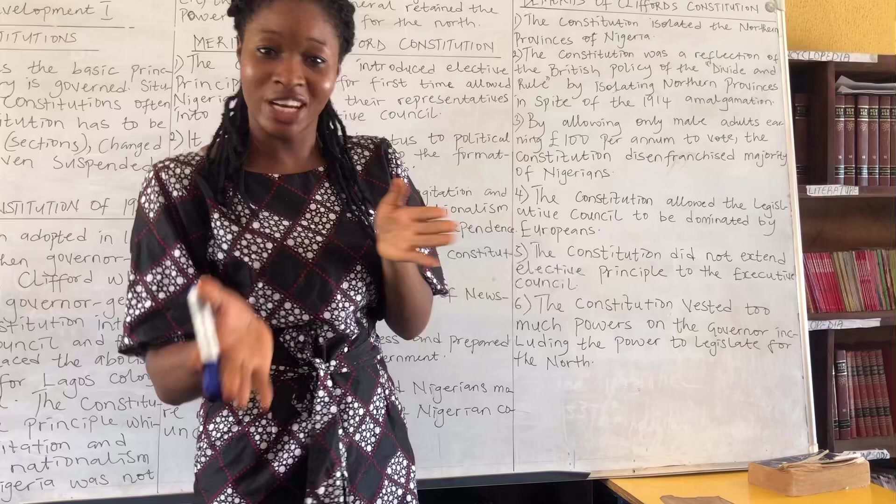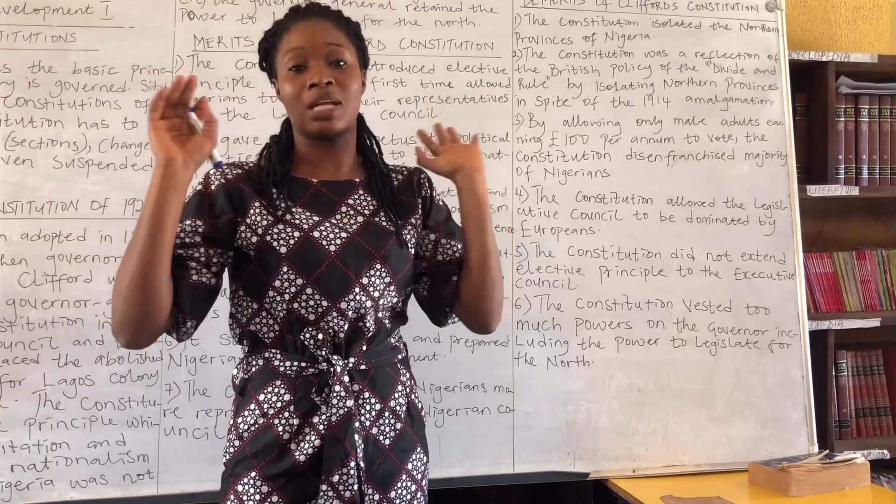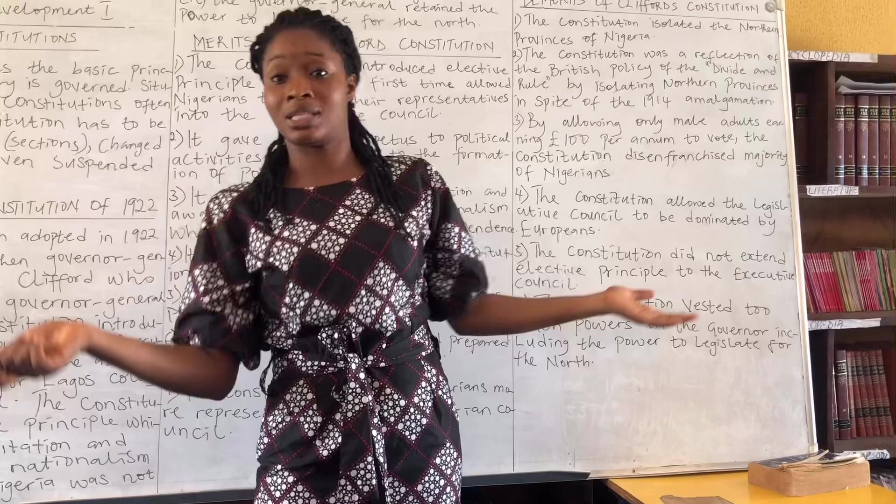Demerit five: the constitution did not extend the elective principle to the executive council. While the legislative council allowed elected members, the executive council was mainly dominated by the governor, who selected its members himself without election.